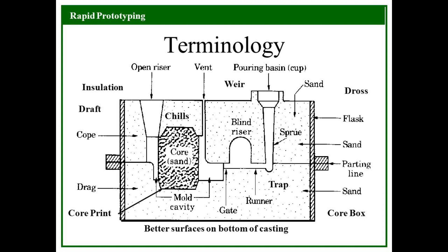Next is the sprue. It is a passage which connects the pouring basin to the runner. It controls the flow of molten metal from the pouring basin. It is tapered in shape. Next is the ingate; it is the entry point through which molten metal enters into the actual mold cavity.